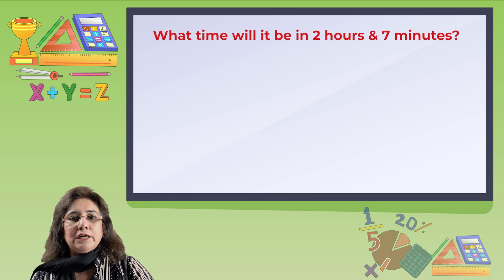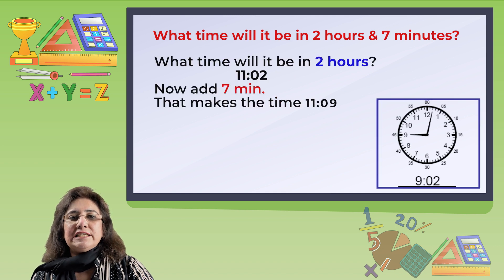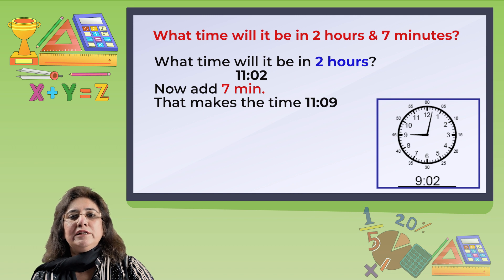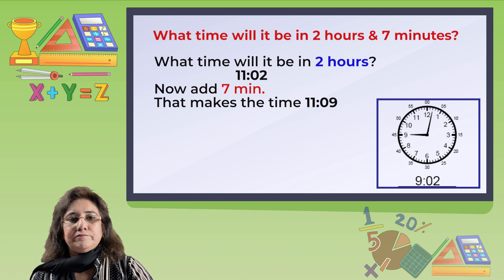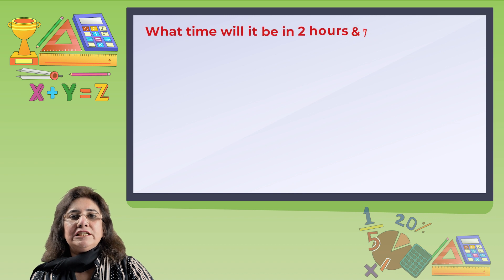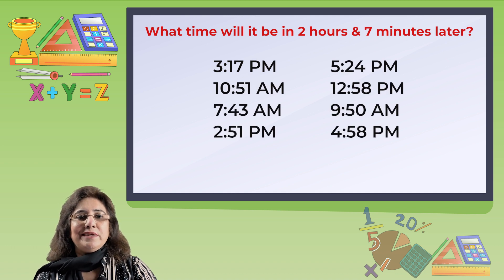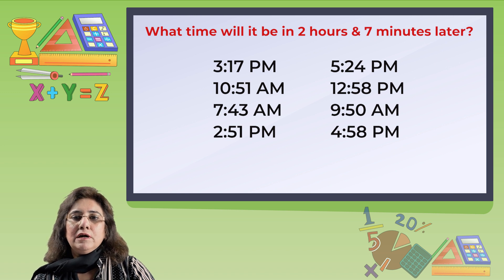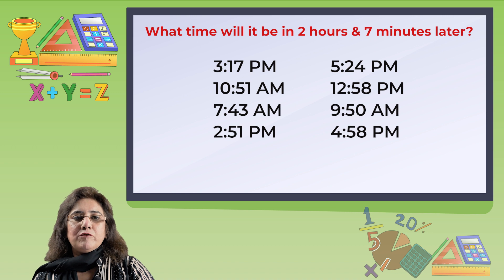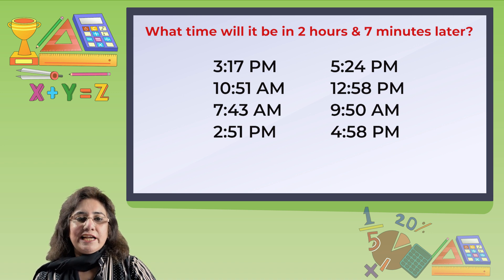Let's try something more challenging. What time will it be 15 minutes later than 9:02 p.m.? In 2 hours it will be 11:02 p.m. Now add 7 minutes — that makes the time 11:09 p.m. What time will it be 2 hours and 7 minutes later? We add hours to hours and minutes to minutes. 3:17 p.m. becomes 5:24 p.m. 10:51 a.m. becomes 12:58 p.m. 7:43 a.m. becomes 9:50 a.m. 2:51 p.m. becomes 4:58 p.m.